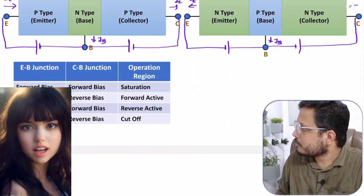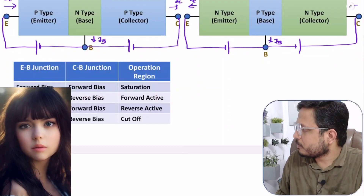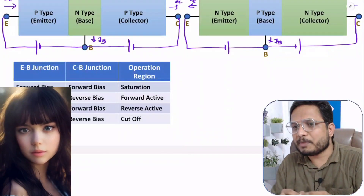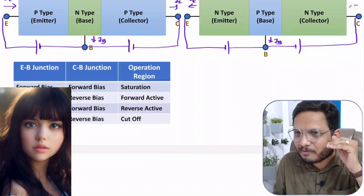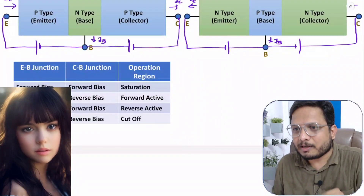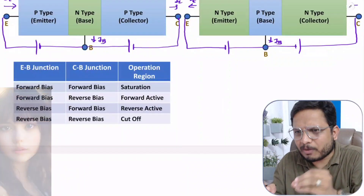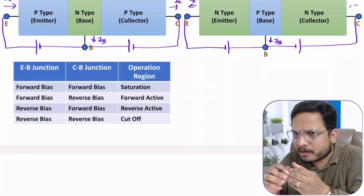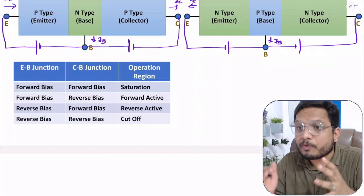Hitesh sir, in last class you said that we don't use the BJT in reverse active region. What is the reason for it? The question is based on why we use BJT in forward active and why we don't use BJT in reverse active. It is not like we don't use BJT in reverse active, but there are some reasons — let me explain those reasons.